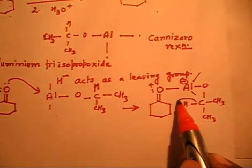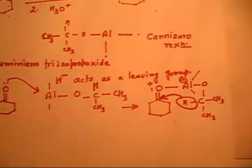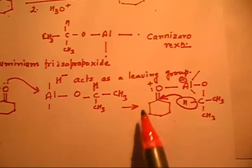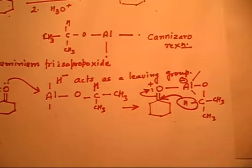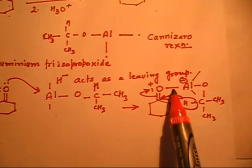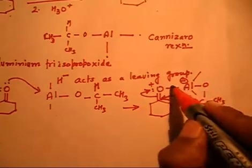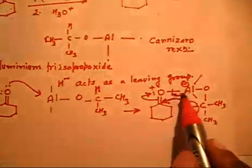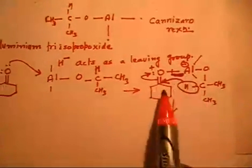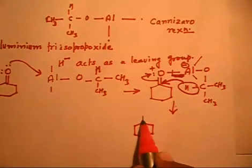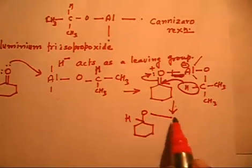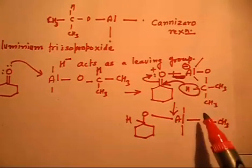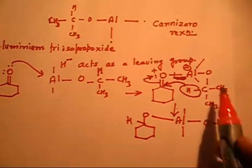In the second step, we transfer the hydride to the carbonyl carbon. Once the hydride shifts, the carbon gets five bonds, so I remove the aluminum–oxygen bond. The oxygen had a positive charge, so I move that electron pair onto oxygen. As this goes to aluminum, we get an intermediate where oxygen is attached to aluminum and the carbon now bears a positive charge.